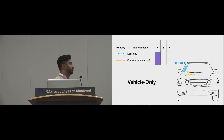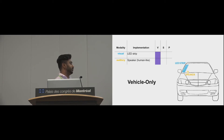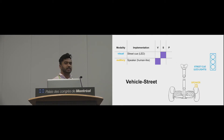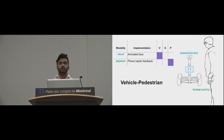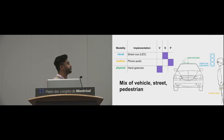All four prototypes were implemented on two platforms: a traditional car and a Segway mobile robot. The first is the vehicle-only interface, where all cues are on the vehicle — an LED strip as a visual cue and a speaker playing human-like voices. The vehicle-street interface incorporates cues both on the street and on the vehicle, combining a visual cue with human-like voice. The vehicle-pedestrian interface uses a display with an animated face plus haptic feedback on the pedestrian. Finally, the mixed interface combines all three locations and all three modalities.